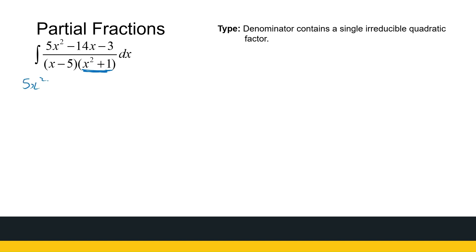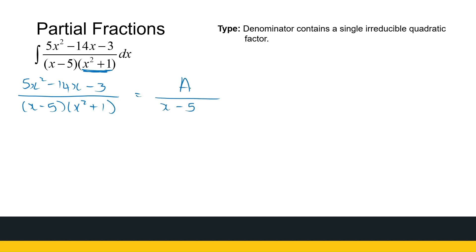So if I look at 5x squared minus 14x minus 3 over (x minus 5)(x squared plus 1), to write it as partial fractions it'll be something over x minus 5. Now x minus 5 is linear, so my numerator is one power less — so it's a constant A — plus something over x squared plus 1. But this can be a linear function, bx plus c. The degree of the numerator is one less than the denominator. So if we've got an irreducible quadratic in the denominator, the numerator takes the form bx plus c. Other than that, we treat it exactly the same.